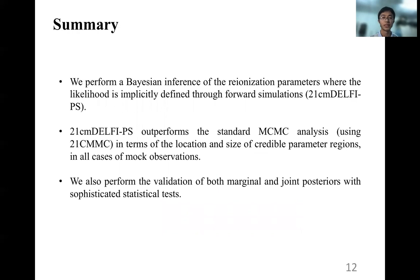So finally, we show the summary. We perform Bayesian inference of the reionization parameters where the likelihood is implicitly defined through forward simulations, which is called 21cmDELFI-PS for short. Our method outperforms the standard MCMC analysis using 21CMMC in terms of the location and size of credible parameter regions, in all cases of mock observations. We also perform the validation of both marginal and joint posteriors with sophisticated statistical tests.